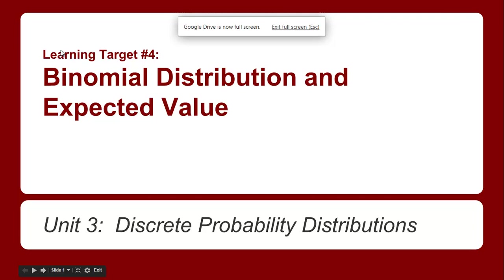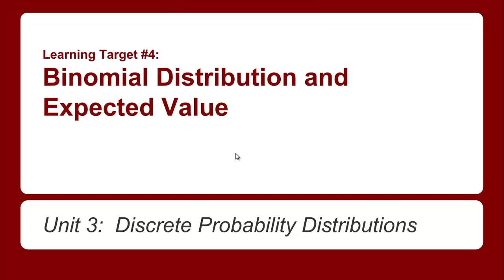Welcome to Learning Target 4, the Binomial Distribution. This is probably one of the more tricky things we have to do in this course. It's not that it's that challenging — there is a formula that you're going to be given, but it's really just about understanding the formula. That's probably the hard part. We really couldn't do it until now; you needed to know permutations, combinations, all of that stuff. You'll see really quickly why.